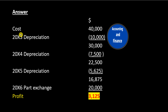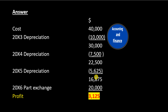Answer: Cost $40,000. Minus 20X3 depreciation of $10,000 gives $30,000. Minus 20X4 depreciation of $7,500 gives $22,500. Minus 20X5 depreciation of $5,625 gives a net book value of $16,875. The 20X6 part-exchange value was $20,000, resulting in a profit of $3,125.